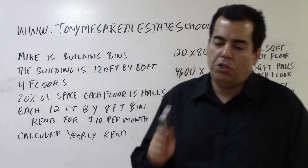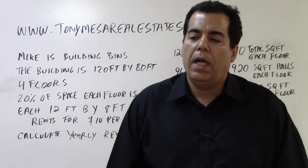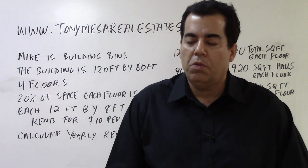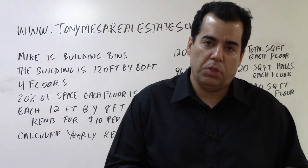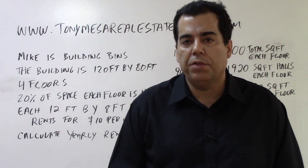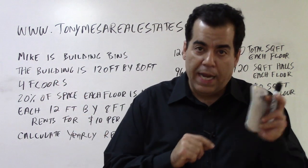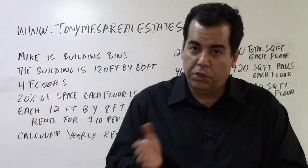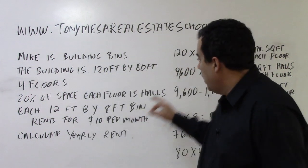Why times 0.2? On the state exam, whenever you have a percentage number and you're going to do a math problem, instead of trying to use the percentage key in your calculator — which sometimes goofs people up — my advice is always change the percentage number to a decimal number. The way you change a percentage to a decimal is you divide by 100. So 20%: take the number 20, divide by 100, and you get 0.2. So 0.2 is how we write 20% as a decimal number.